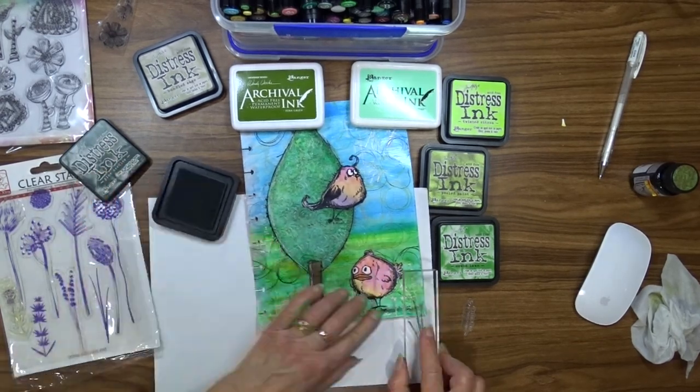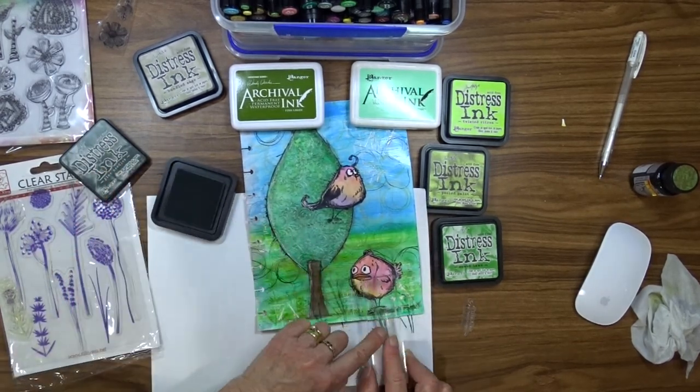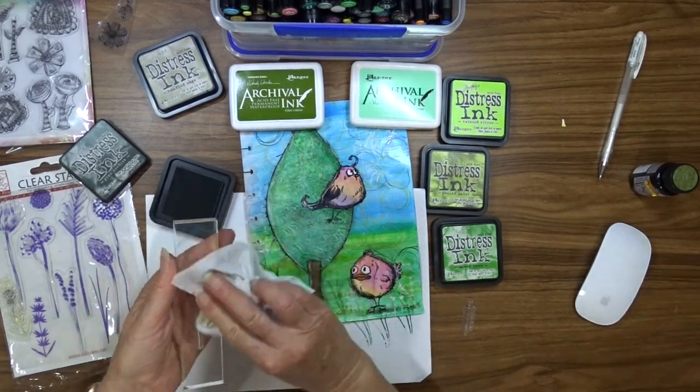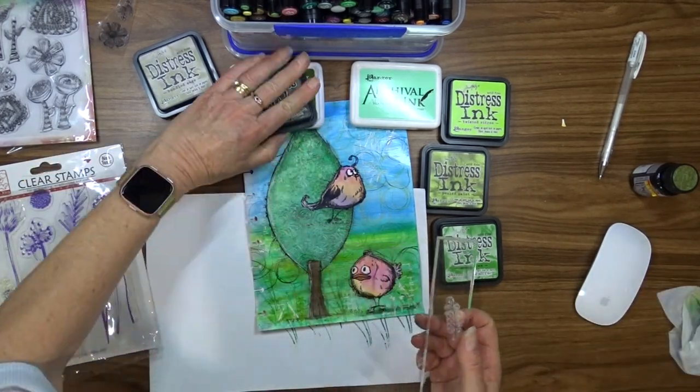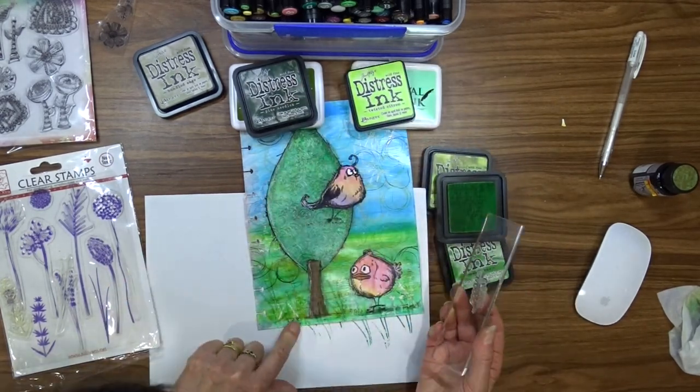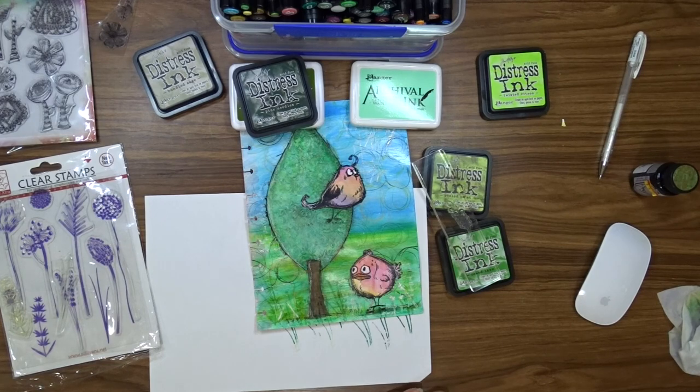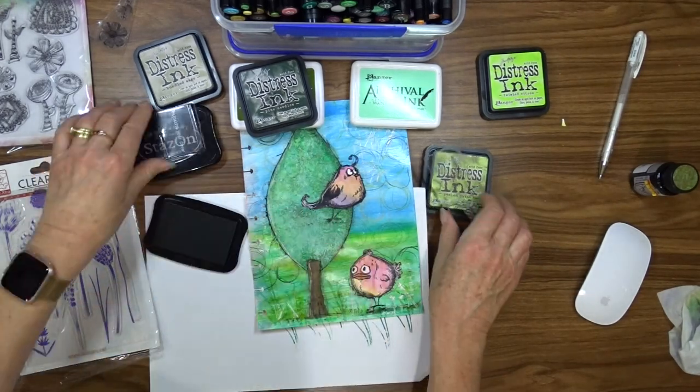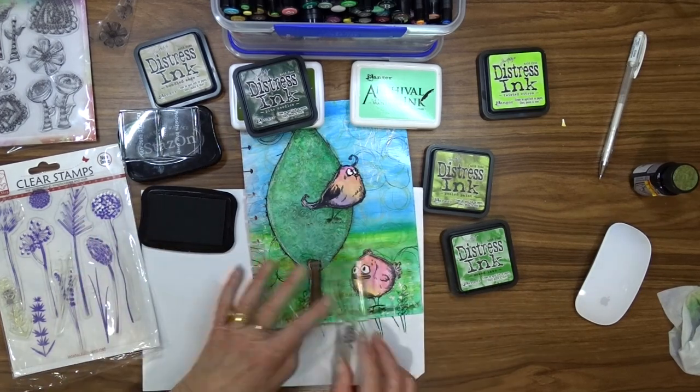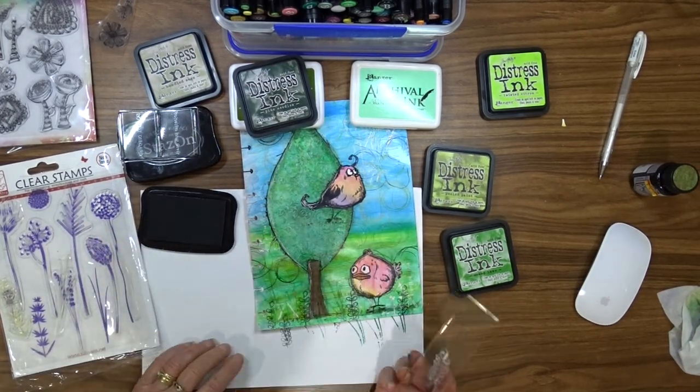And the inks I'm going to use are Distress Ink Pine Needles, Archival Ink Fern Green and Stazon Black. I'm just going to stamp these small stamps randomly along the bottom just so that there's something there to sort of ground the whole page.